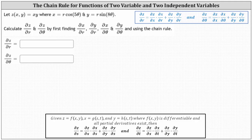Let z of x comma y equal xy, where x equals r cosine five theta and y equals r sine two theta. Notice both x and y are functions of two variables, r and theta.